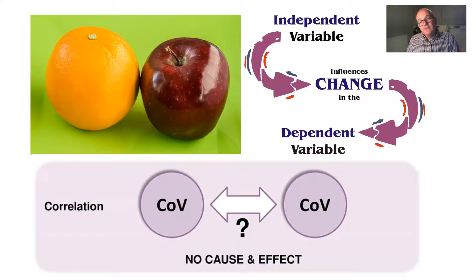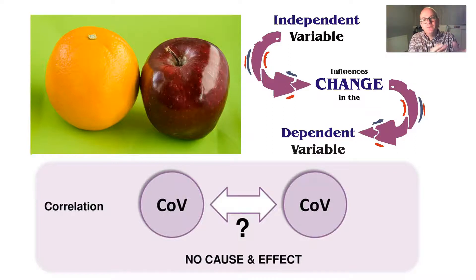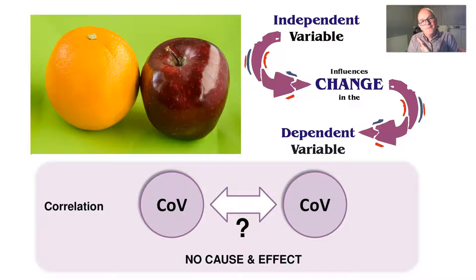Not all psychological research works like that. Some psychological research looks at not how different groups are, but how similar things are - and that's called a correlational study. In a correlational study, instead of having two separate groups like orange and apple, we have one group. But instead of measuring one thing's sweetness, we measure two things. We look at the relationship between the two things measured within that one group.